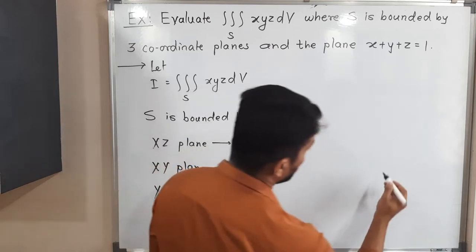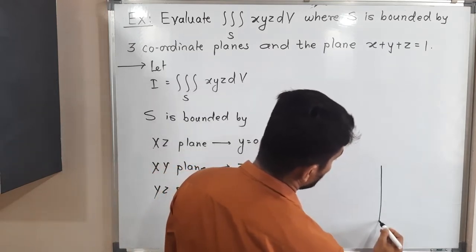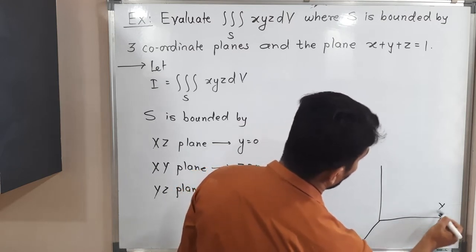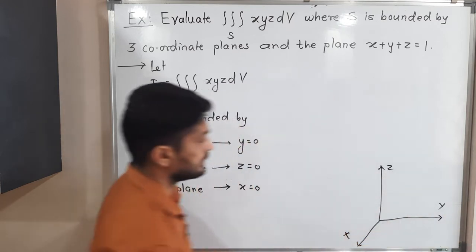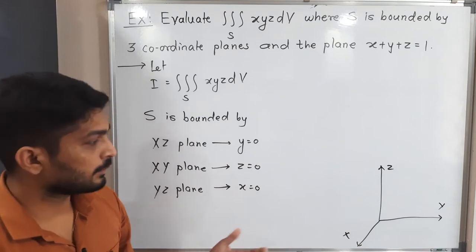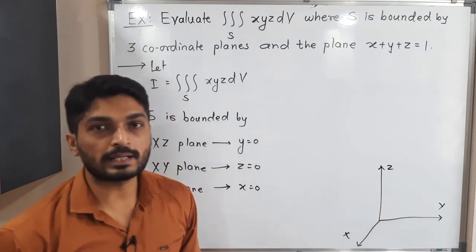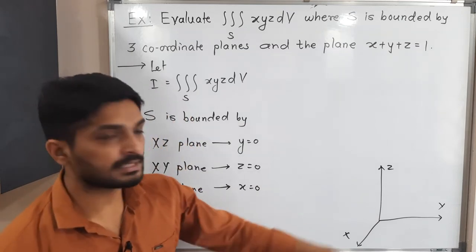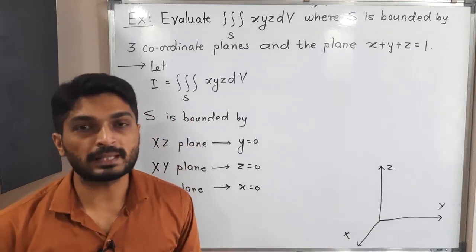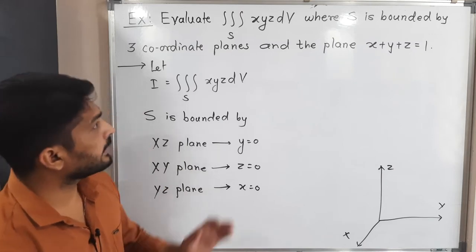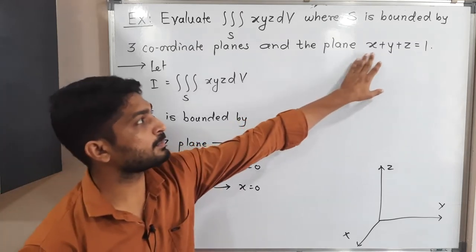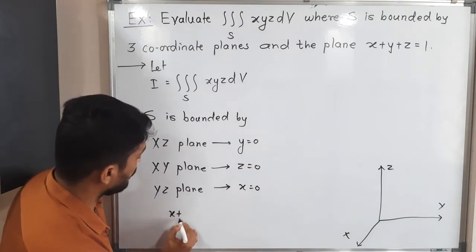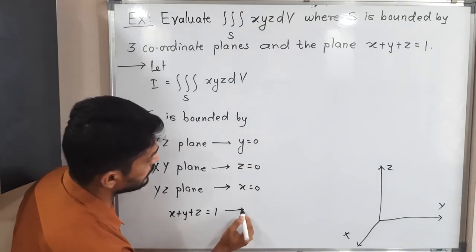Let us draw the three-dimensional figure with the z-axis, y-axis, and x-axis. We have three planes: x = 0 (the yz-plane), y = 0 (the xz-plane), and z = 0 (the xy-plane). After those three planes, there is one more plane: x + y + z = 1.